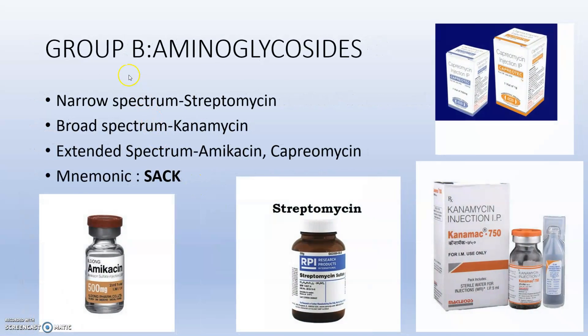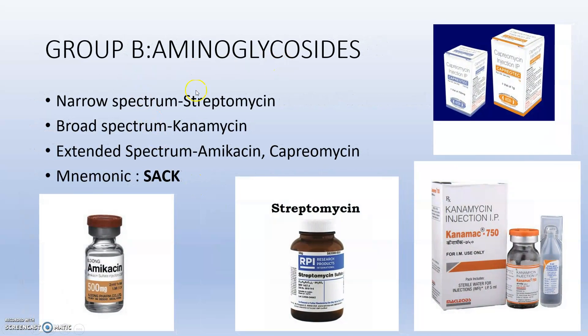Group B is aminoglycosides: narrow spectrum — streptomycin; broad spectrum — kanamycin; extended spectrum aminoglycosides — and capreomycin. You can use the mnemonic SAC to remember these.